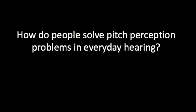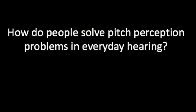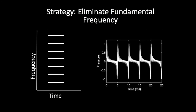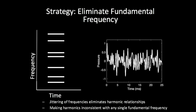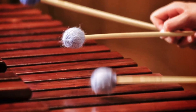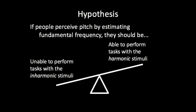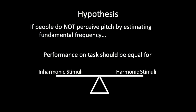We wanted to investigate how people solved problems like this, as well as more complex problems, in real-world hearing. To probe for multiple pitch perception mechanisms, we developed stimuli that are inharmonic. We took harmonic sounds — sounds that repeat in time and have evenly spaced harmonics — and randomly jittered the harmonics so they were no longer evenly spaced. These inharmonic sounds are inconsistent with any single fundamental frequency. Our hypothesis was that if people perceive pitch by estimating fundamental frequency, they would be unable to perform tasks with inharmonic stimuli. But if people could do a task with inharmonic stimuli, it would suggest they are not using fundamental frequency, and are instead figuring out the correct answer some other way, perhaps by tracking the harmonics.